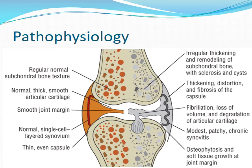Looking at a normal joint versus an osteoarthritic joint: normal bone texture breaks down and becomes remodeled over time. The synovial fluid and cartilage are no longer well maintained, breaking down and becoming much less functional.